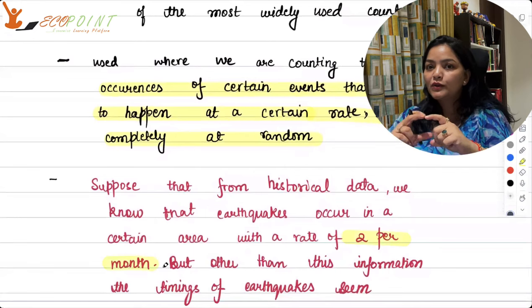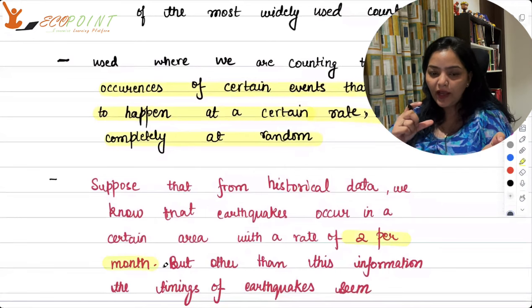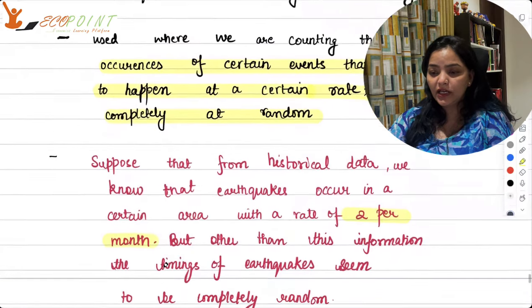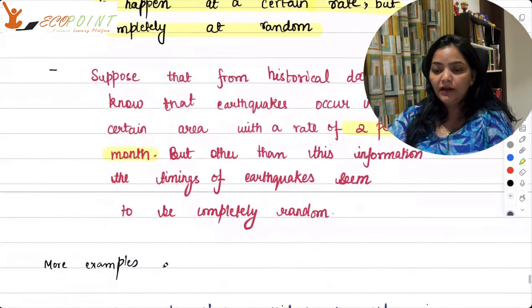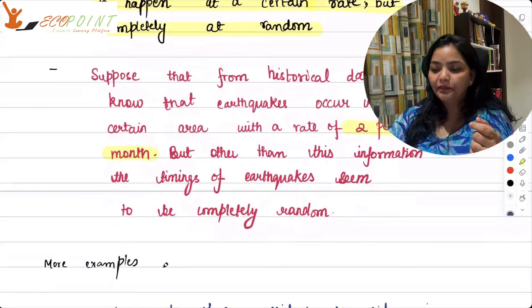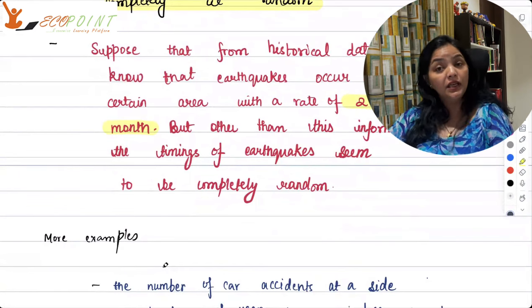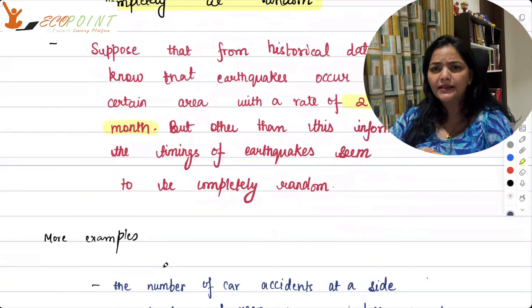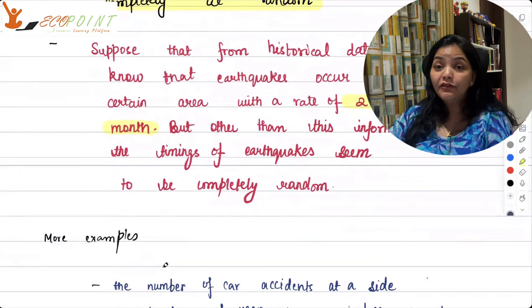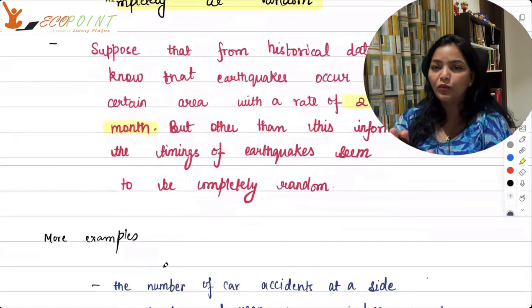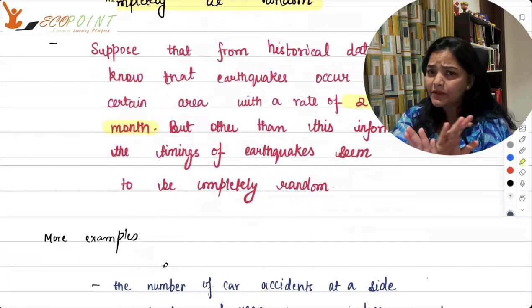But that's the only information you have. You don't have the exact information when, the timings, the length. You don't have all those informations. You have an average rate of occurrence. This is something which is crucial to Poisson process. You need to have, whatever event you are thinking about, the average rate of occurrence.